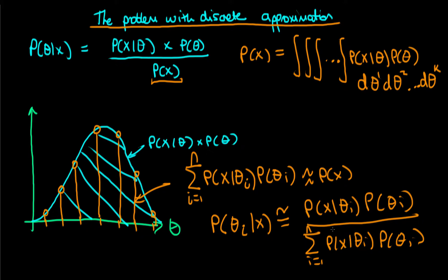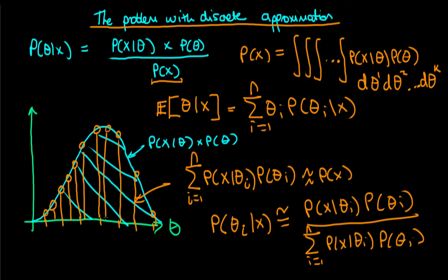So in one dimension we can work out these quantities easy enough and what does that mean? Well it means that we could also work out summaries of that distribution. So let's imagine that we want to work out the expected value of theta given x. We could do so by simply taking our approximate posterior and then summing theta i times p of theta i given x and we're summing over all our grid points. And that would give us an approximate estimate of the expected value of theta.